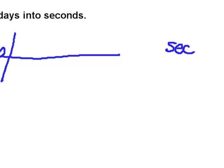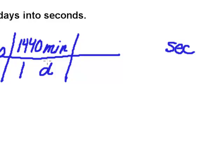Days is on top, which means to cancel, the next day has to go underneath here on the bottom. And I don't know how many seconds there are in a day, but I do know how many minutes there are in a day. So I'm going to start there. For every 1 day, and days gets the 1 because it's bigger, there are 1,440 minutes.